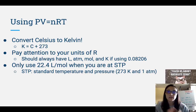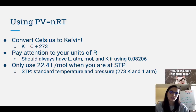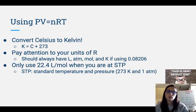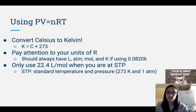When you're using the ideal gas law, make sure you're converting your temperature — don't miss a point because you didn't convert Celsius to Kelvin. K equals C plus 273, and that is on your equation sheet. Pay attention to your units of R; all values of R are on the equation sheet. If you're using 0.08206, you should have liters, ATM, moles, and Kelvin. Remember that you can only use molar volume — 22.4 liters is one mole — when you are at STP, which is 273 Kelvin and one ATM.